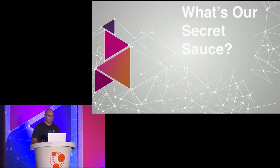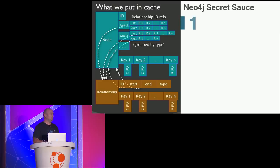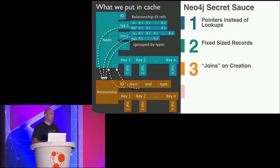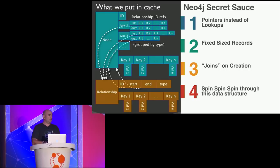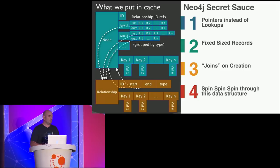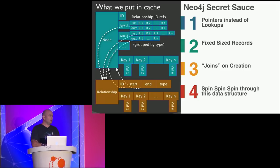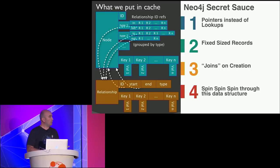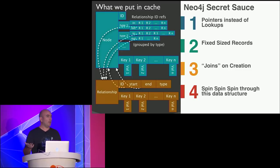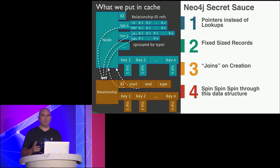Our secret sauce — if you're going to pay attention at all for these 40 minutes, this is the time. Put your phones down and give me two or three minutes. Basically what you have are two giant arrays: one array of nodes, one array of relationships. Every record in the array is a fixed-size record. Every node knows what types of relationships are connected to it — so in a social network, node one knows it has a friends relationship (type one), a likes relationship (type two), and so on.